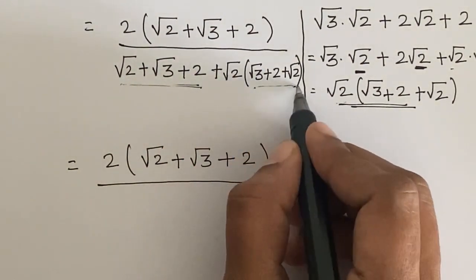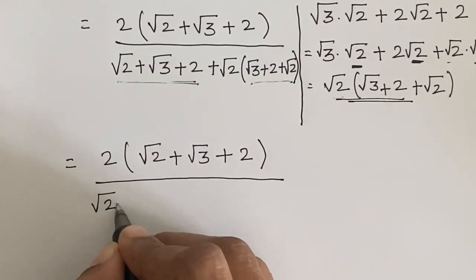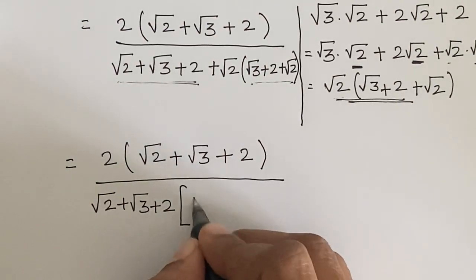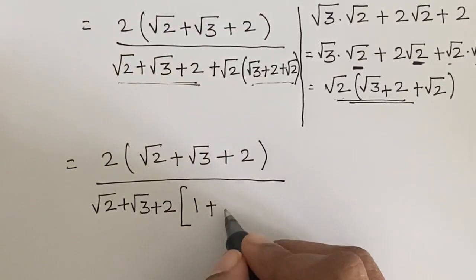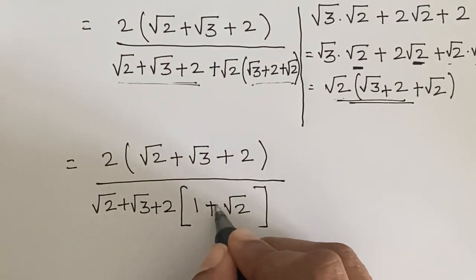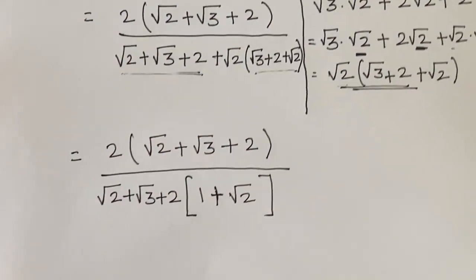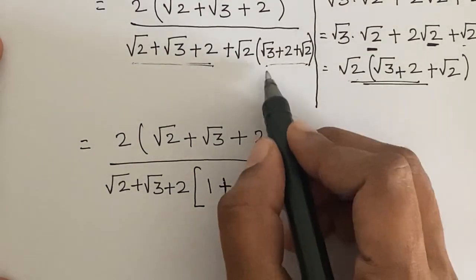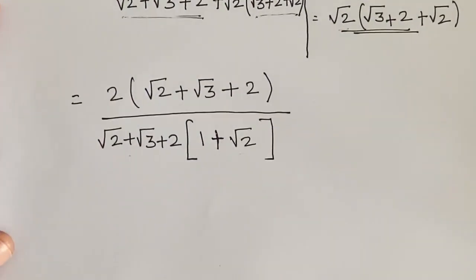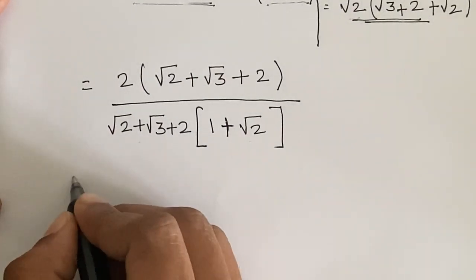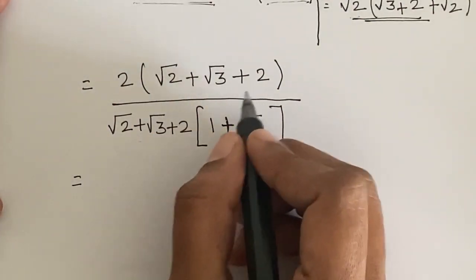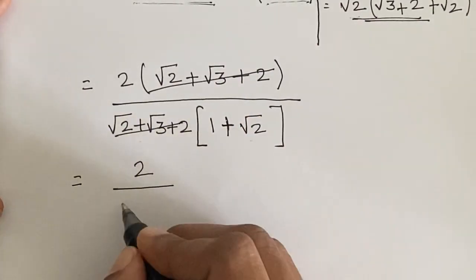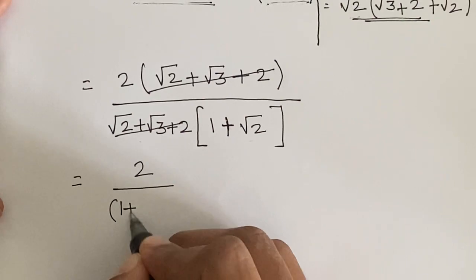This equals 2 times of square root of 2 times square root of 2 plus square root of 3 plus 2, over — if you note, square root of 2 plus square root of 3 plus 2 is in common, so we take it out commonly. We get square root of 2 plus square root of 3 plus 2, times 1 plus square root of 2. So if we multiply this we get the second term, and we cancel these out. So we get 2 over 1 plus square root of 2.